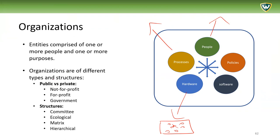Organizations are of different types and structures, and there are many ways to classify them. I'll discuss later the major differentiation of organizations as not-for-profit, for-profit, and government. There are various kinds of internal structures and decision-making structures: committee forms, ecological structures, matrix structures, and hierarchical structures. Organizations are pretty much always hierarchical, but with different levels — some are more 'tall' and some are more flat in their decision making.